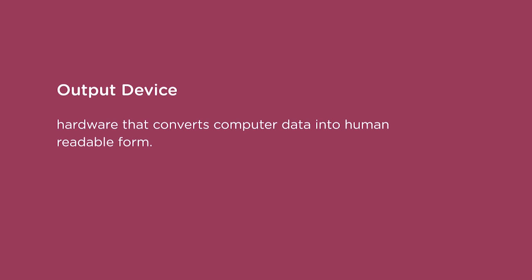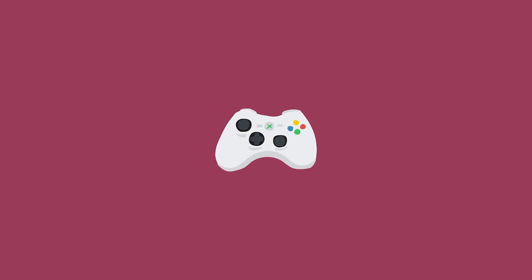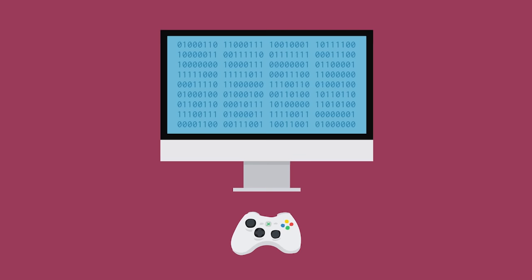An output device is hardware that converts computer data into human-readable form. For example, a screen displays text and images, a printer provides a physical paper output for later use, speakers offer audio feedback, and your video game controller provides tactile feedback whenever it vibrates in your hand. The computer only sees zeros and ones, but it converts it back to information that humans can understand.